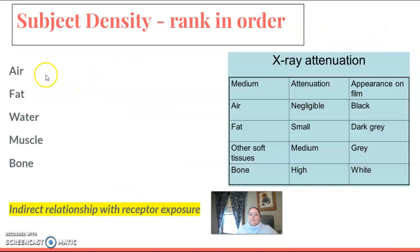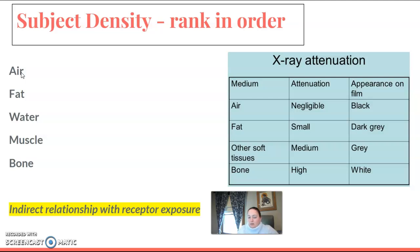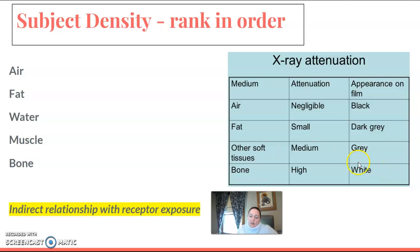And subject density — can you rank these options in order of subject density, from least dense to most dense, or by attenuation? Air doesn't really attenuate; x-rays pass right through and it shows up as black. Fat will attenuate a small amount, giving a dark gray appearance. Then other tissues, and then bone — bone attenuates a lot and shows up as a bright white color.